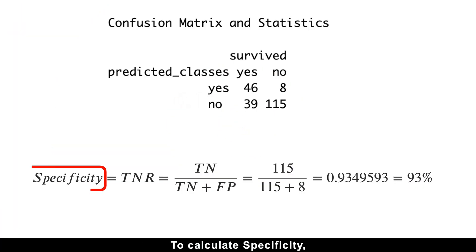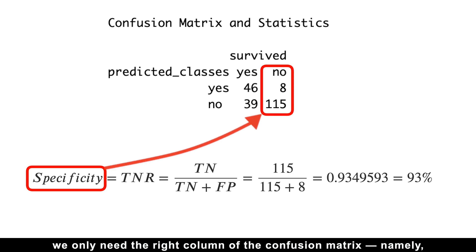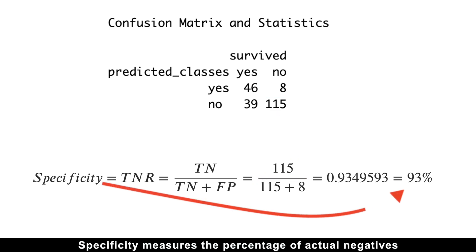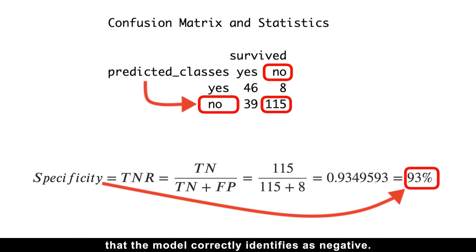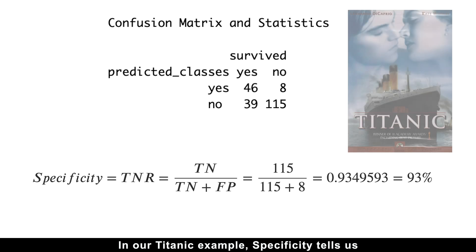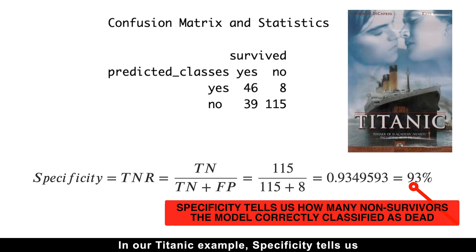To calculate specificity, we only need the right column of the confusion matrix. Namely, we divide the true negatives by all actual negative cases. In plain English, specificity measures the percentage of actual negatives that the model correctly identifies as negative. That's why another name for it is the true negative rate. In our Titanic example, specificity tells us how many non-survivors the model correctly classifies as dead.